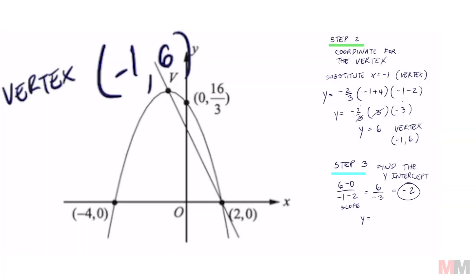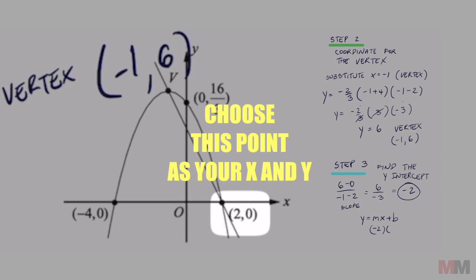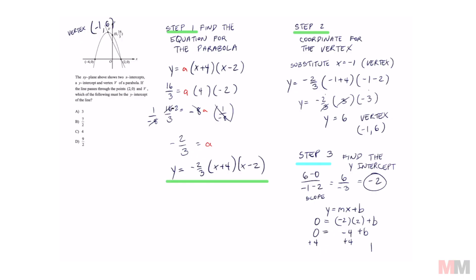We can use y equals mx plus b, the slope-intercept form, to find the y-intercept. Let's substitute some points. We're going to use negative 2 for the slope. For the x-coordinate, I'm just going to choose this point right here because it's easy. b is going to equal 4.